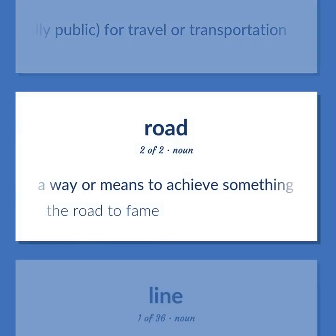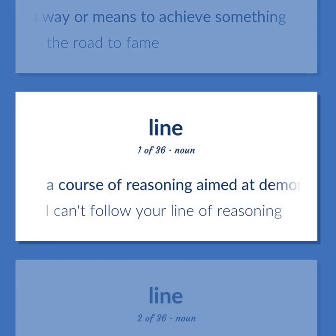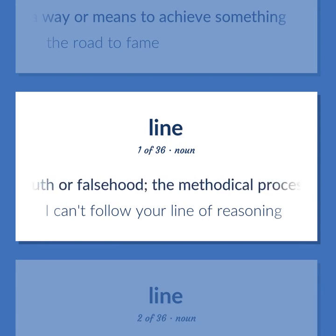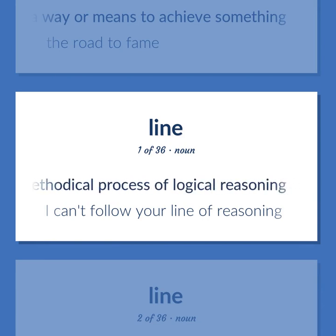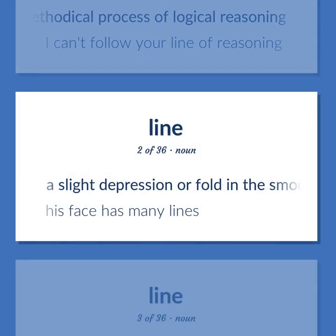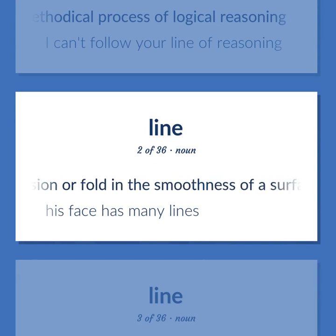A way or means to achieve something. The road to fame. A course of reasoning aimed at demonstrating a truth or falsehood. The methodical process of logical reasoning. I can't follow your line of reasoning. A slight depression or fold in the smoothness of a surface. His face has many lines.